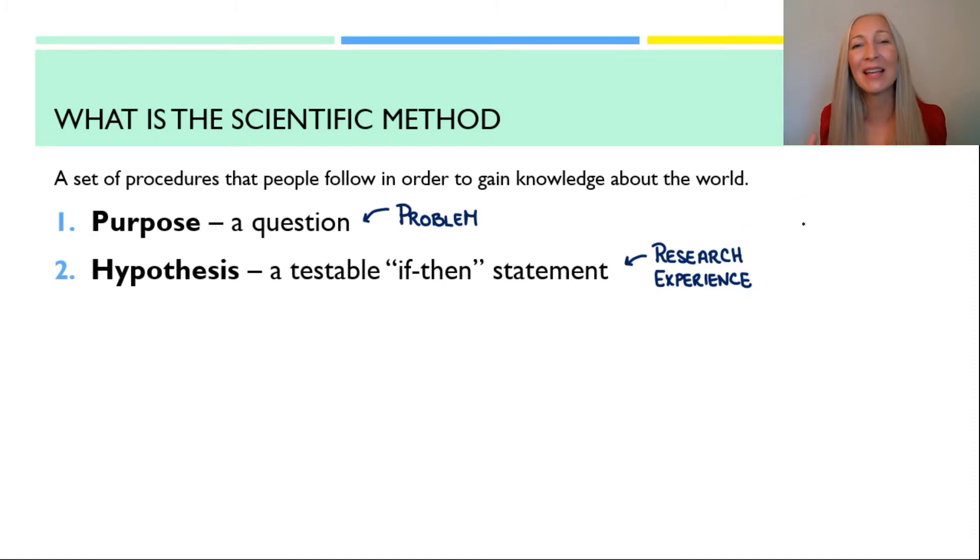Now, sometimes when people are talking about science, they may refer to something as a null hypothesis. What this means is you are trying to prove that there is no relationship between the two variables. For example, in my scenario,